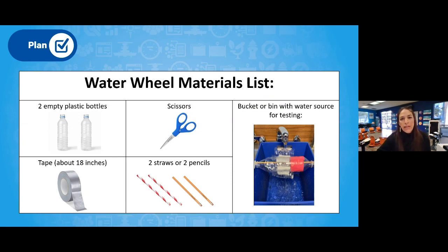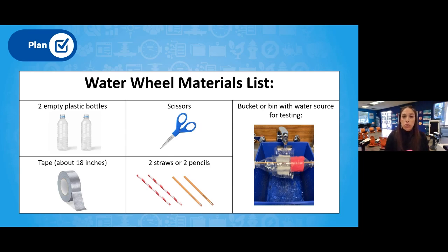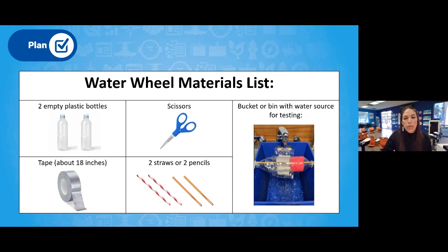For our prototype today, here's what you will need: two empty plastic bottles, a pair of scissors, about 18 inches of tape, two straws or two pencils, and when you're ready to test, some kind of tub to capture the flowing water — or you can put it in a sink where you can use running water to test your prototype. If you need to gather these materials, you can press pause and then play once you have everything you need.